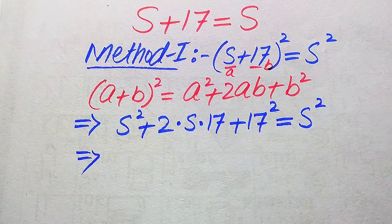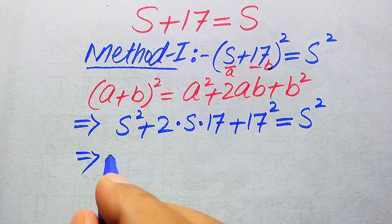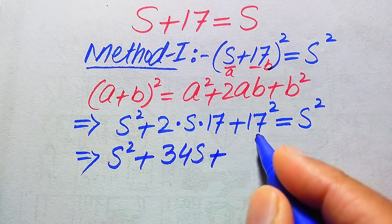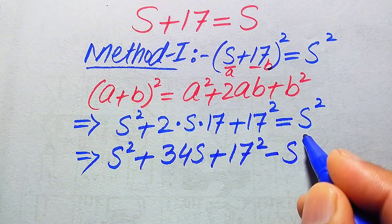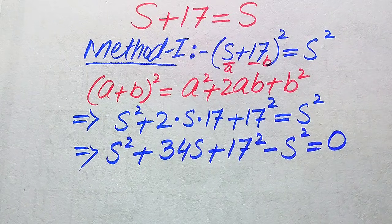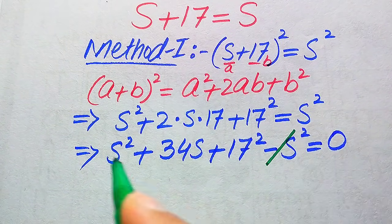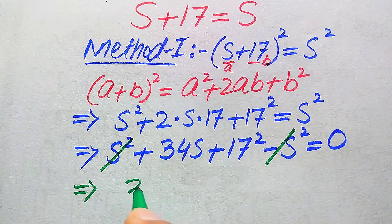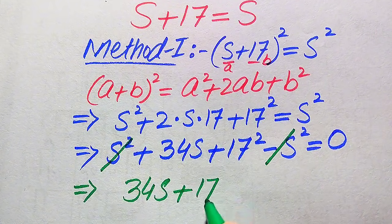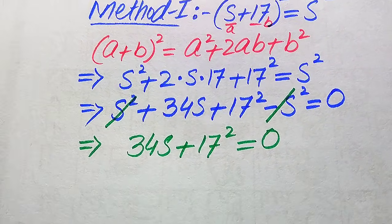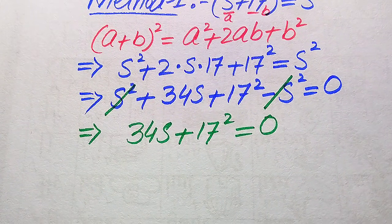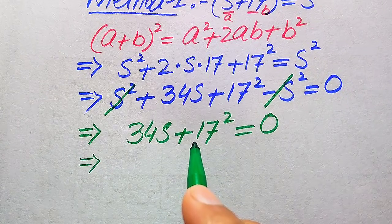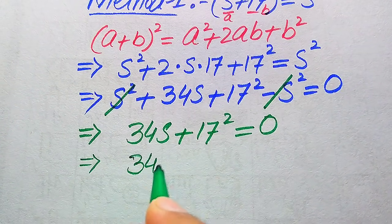This equals s². We move s² from the right-hand side to the left-hand side. It becomes s² + 34s + 17² − s² = 0. The s² terms cancel out, leaving 34s + 17² = 0. Now we move 17² to the right-hand side.